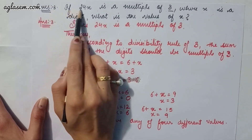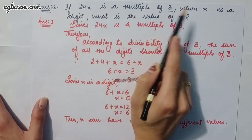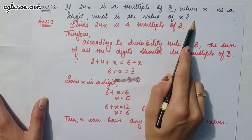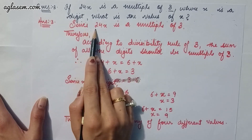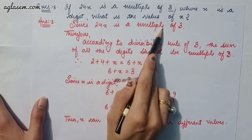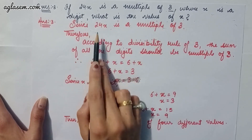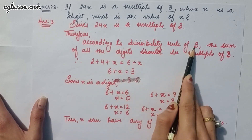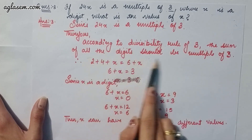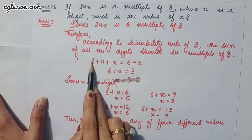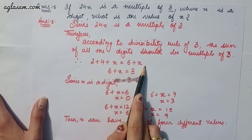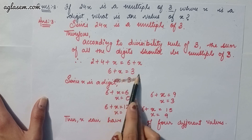The third question says: if 24x is a multiple of 3, where x is a digit, what is the value of x? Since 24x is a multiple of 3, according to the divisibility rule of 3, the sum of all the digits should be a multiple of 3. That is 2 + 4 + x = 6 + x.